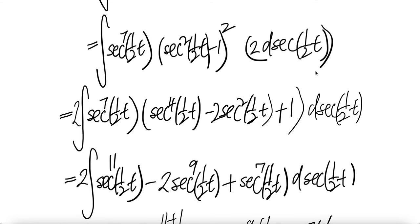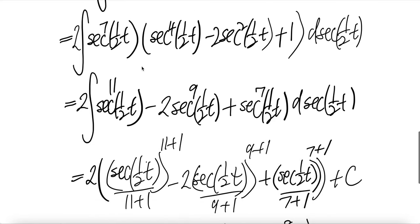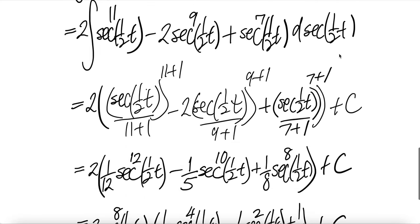Pull two out of the integral, then d sec half t. Here you distribute: you get sec to the power eleven, and then here minus two sec to the power of nine, seven plus two, and then here plus sec to the power seven, and then d sec half t.